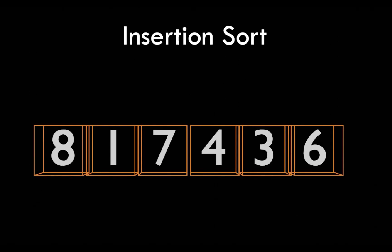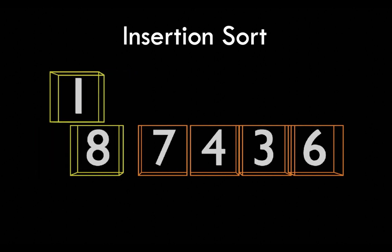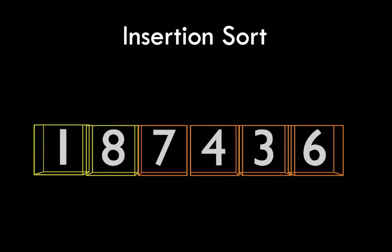Let's have a look at an example. Here is a standard list of six elements. The first thing we do is look at the second element, which is one in this case. We compare it with the previous element, which is eight. Eight is greater than one, so we make a swap.